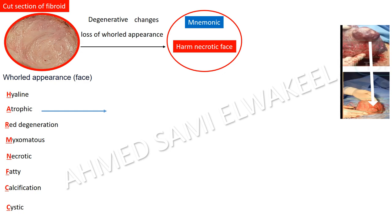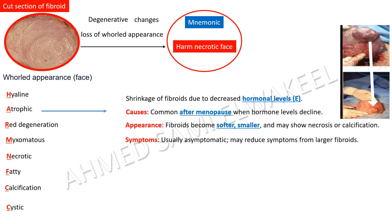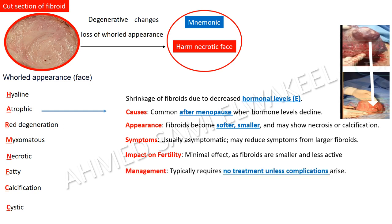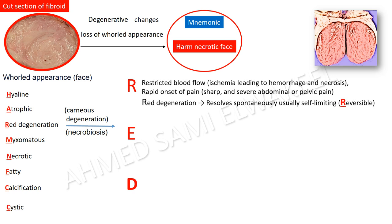Atrophic degeneration: shrinkage of fibroids due to decreased estrogen, common after menopause when hormone levels decline. Fibroids become softer, smaller, and may show necrosis or calcification. Usually asymptomatic with minimal impact on fertility, typically requiring no treatment unless complications arise.